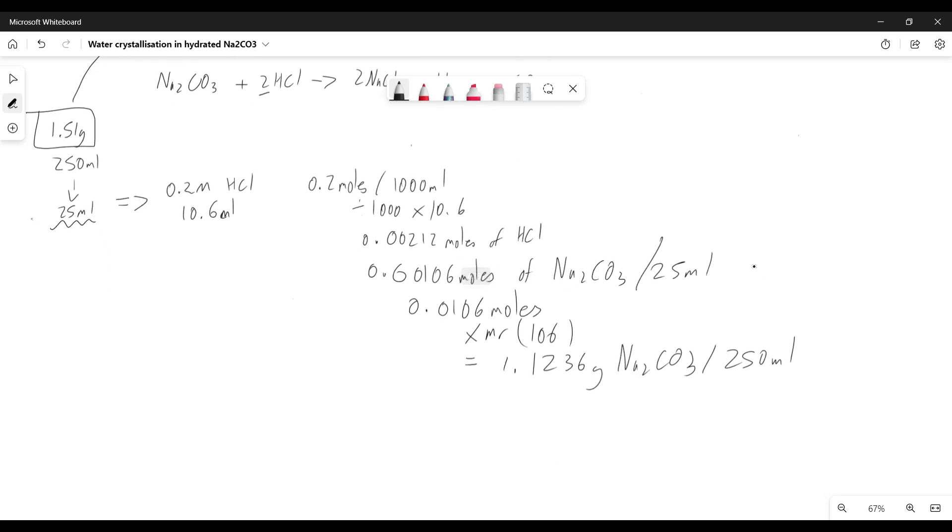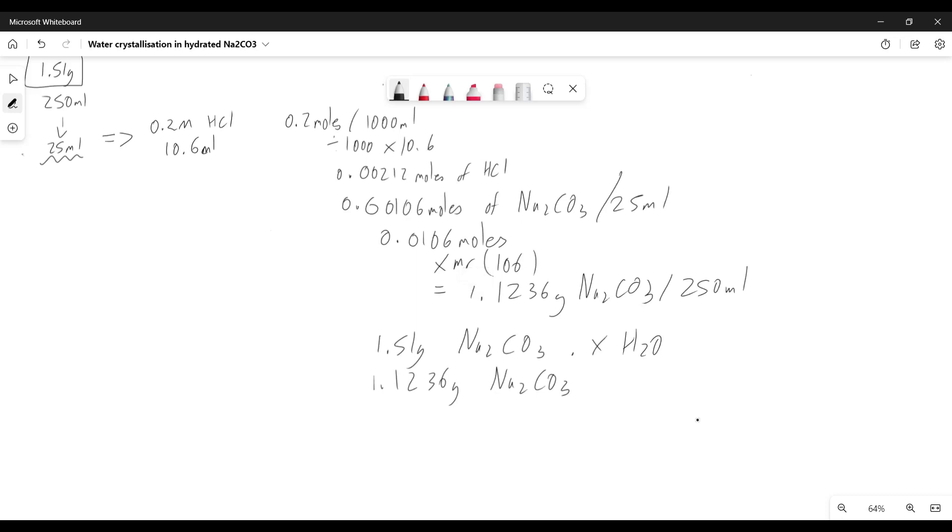We know overall that we had 1.51 grams of our hydrated sodium carbonate. Now we know we have 1.1236 grams without the water. So to find the amount of water, we just take this away. If we do that subtraction, we will see that we have 0.3864 grams of water.